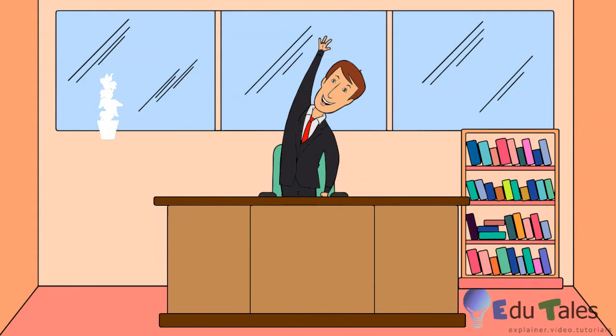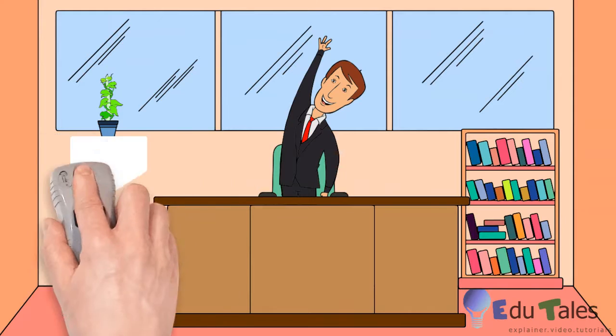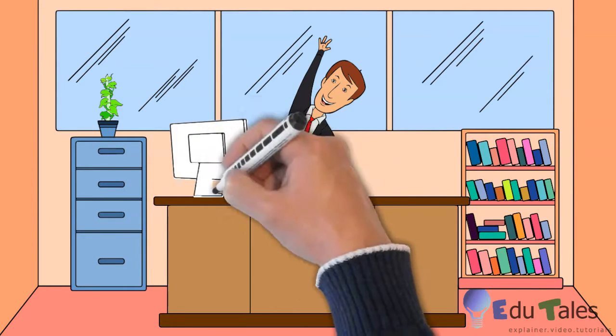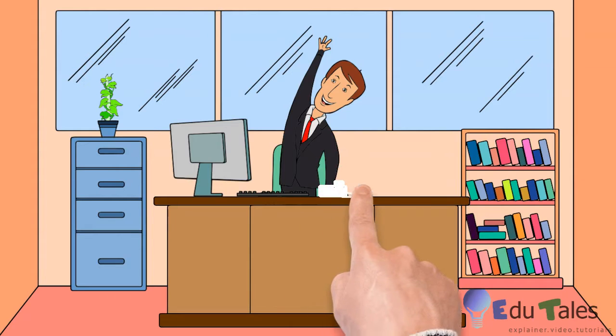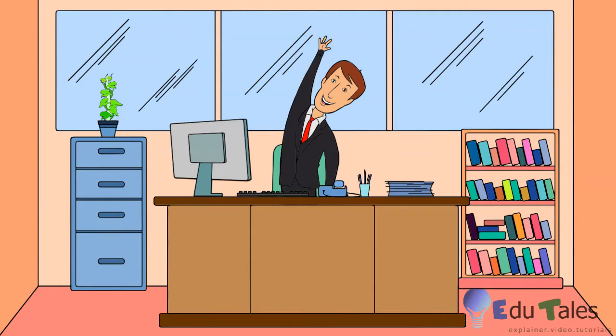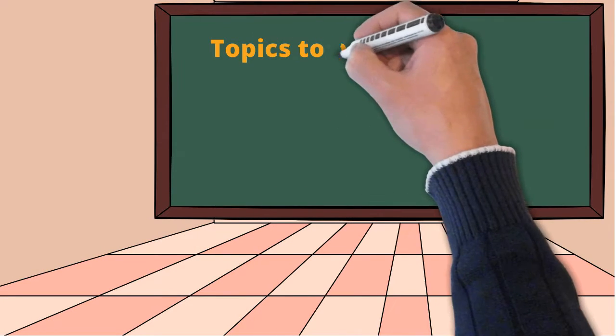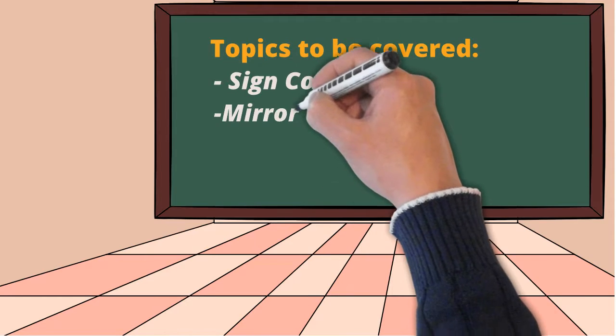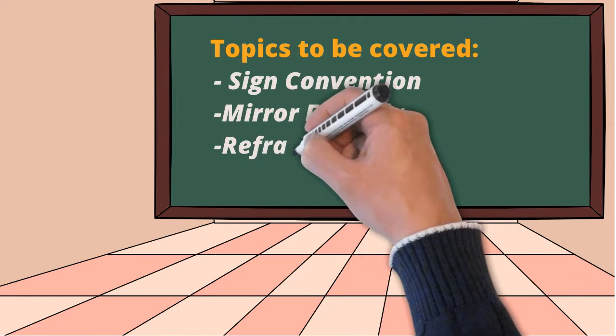Hello students, welcome to the third edition of chapter 10: light reflection and refraction. If you are watching a physics video for the first time, you can click on the link given in the description to watch the previous topics. In this video we will be learning about the sign convention for reflection by spherical mirrors, the mirror formula, the phenomenon of refraction, and refraction due to glass slab.